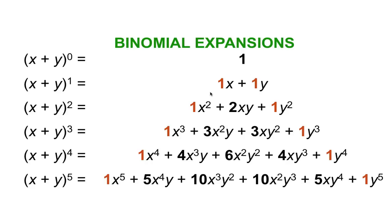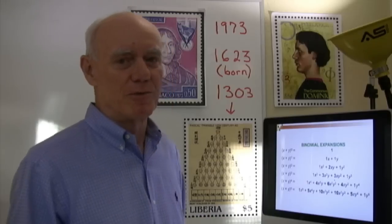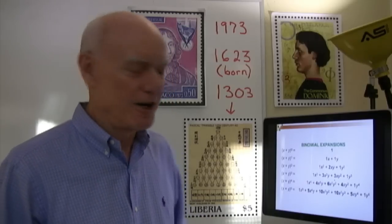Pascal's triangle is simply the coefficients of all the terms. So you can see 1, 2, 1 and 1, 3, 3, 1, so on and so forth. And that's what forms Pascal's triangle.